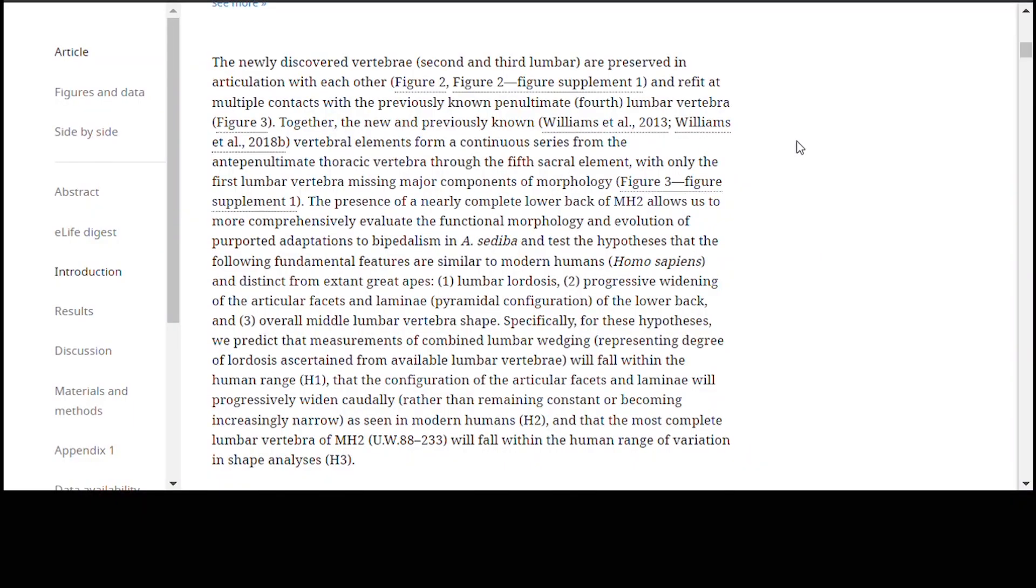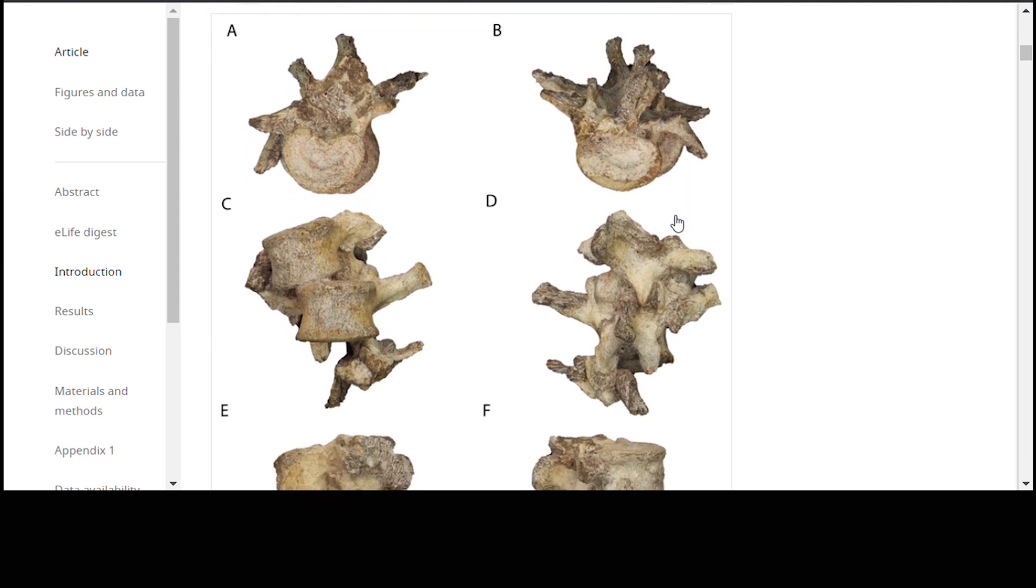Together, the new and previously known vertebral elements form a continuous series from the antepenultimate thoracic vertebrae through the fifth sacral element with only the first lumbar vertebrae missing major components of morphology, although they did find some parts of that particular vertebrae.